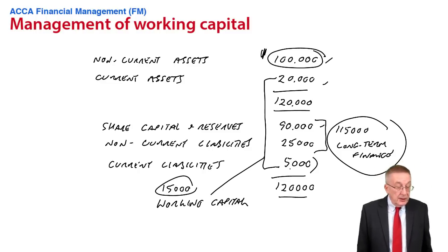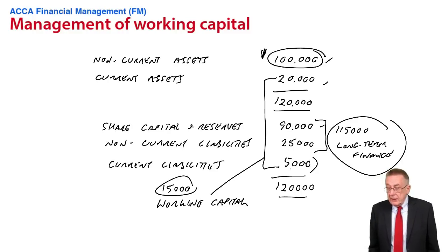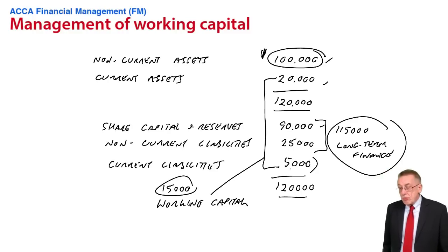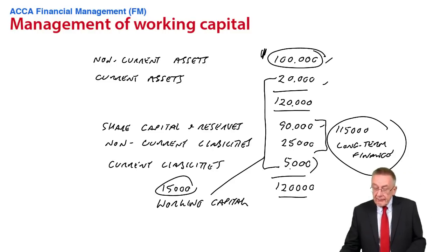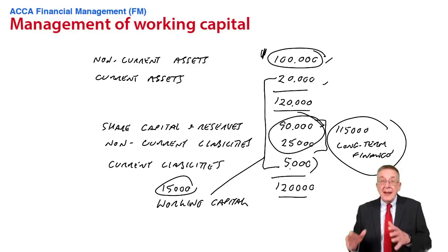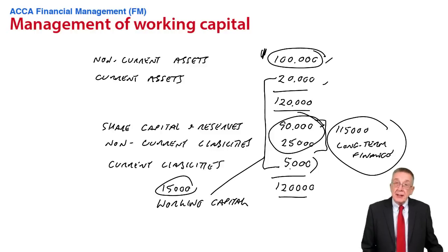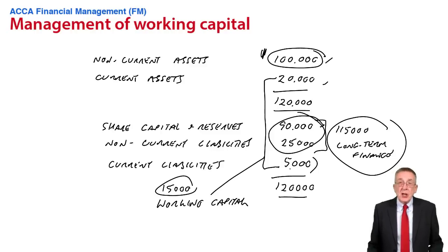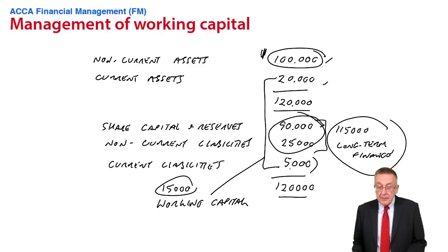Looking at paragraph four, it talks about the financing of working capital. In the simple statement of financial position on screen, that 15,000 has all been financed by long-term finance — share capital and reserves and non-current liabilities. It's long-term money being used for the working capital. The alternative would be to use short-term money: instead of having a long-term loan of 25,000, they could have used overdraft finance, and the 25,000 would then be a current liability.